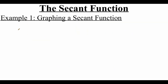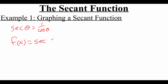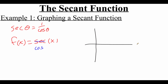As we're graphing a secant function, we have to remember that the secant of theta is the reciprocal of the cosine. So if we're looking at graphing f(x) = sec(x), we're going to use what we know about the cosine function to help us. We'll pretend the equation says cosine of x, graph that out, and then make adjustments to get our secant graph.